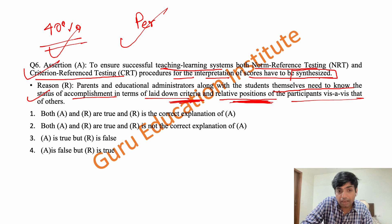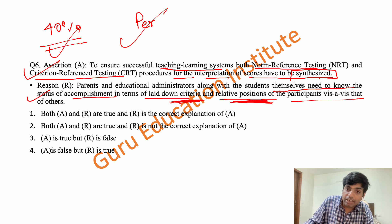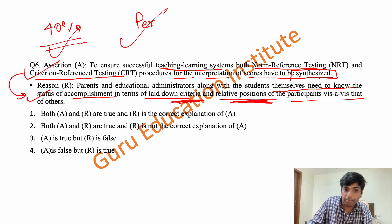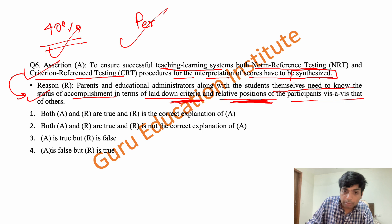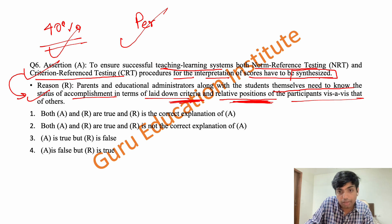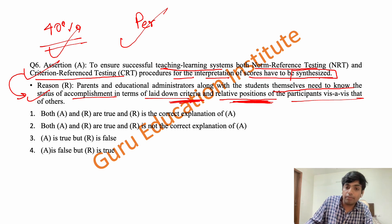Let's see if R is the correct explanation of A or not. To ensure successful teaching and learning, both criteria reference and norm reference tests should be used. Both statements need to be written and analyzed together.